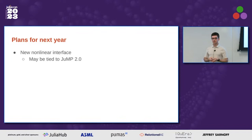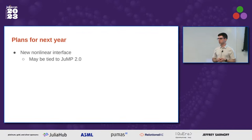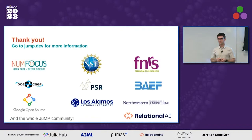In terms of plans for the next year, it's a short list but a major point: the new nonlinear interface is probably our biggest item and will probably be tied to JuMP 2.0. There are definitely more things that will come out of the discussions at the workshop this week, but the nonlinear interface is the big thing. With that, I'll thank everyone and look forward to the rest of the workshop.